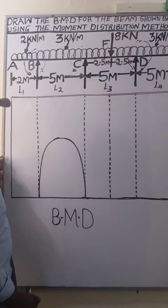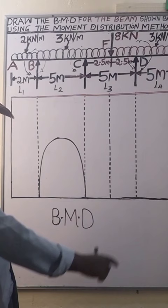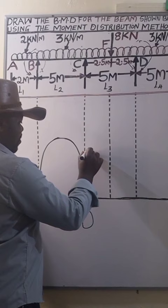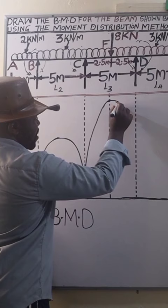Then on the span C to D we have 19.38. It is also going to be a smooth curve since it is loaded with a UDL. So we got a smooth curve. I hope that is a smooth curve.